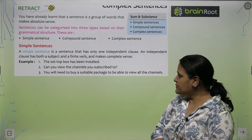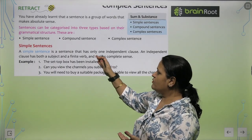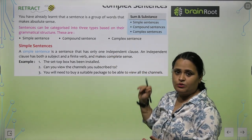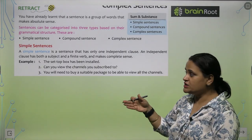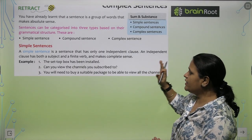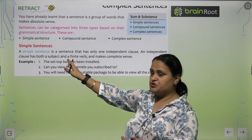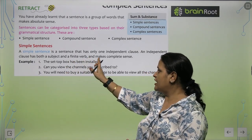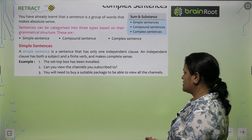Now, what are Simple Sentences? A simple sentence is one in which there is only one independent clause. An independent clause has both a subject and a finite verb and makes complete sense.